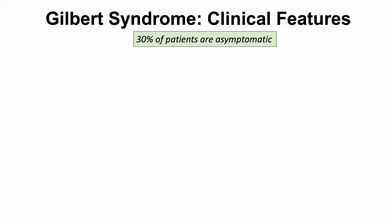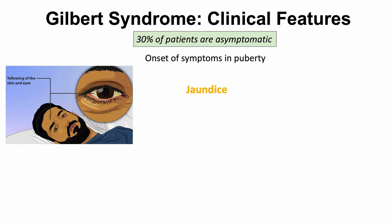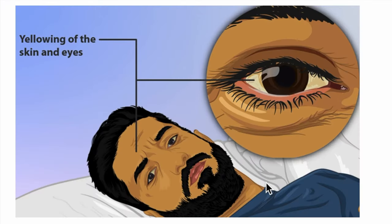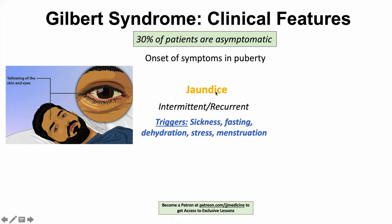What are the clinical features of Gilbert syndrome? 30% of patients are actually asymptomatic, meaning they never have symptoms. If symptoms do occur, onset generally happens in puberty due to changes in hormones. The main clinical finding is jaundice — yellowing of the skin and the eyes, including yellowing of the sclera, known as scleral icterus. The jaundice is intermittent and recurrent, with triggers including sickness, fasting, dehydration, stress, and menstruation.